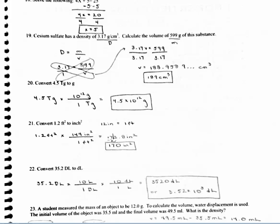I've got 3.17 for my density equals my mass, which is 599, divided by my volume. Since volume is in the denominator, I'm going to cross multiply. So 3.17 times V equals 599 times 1. To isolate V, you divide by 3.17 on both sides, and you end up with a long answer. The units for density are grams divided by centimeters cubed, and since density is mass divided by volume, and my units for mass are grams, the units for volume have to be centimeters cubed.